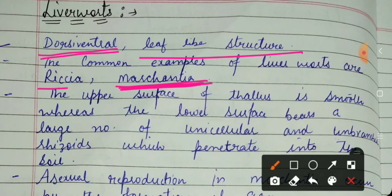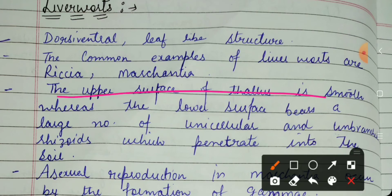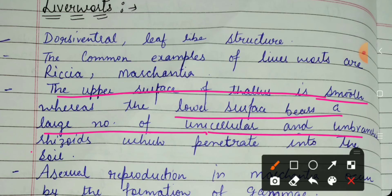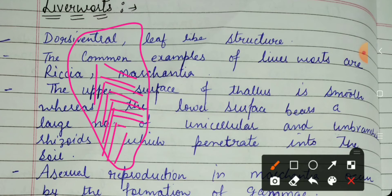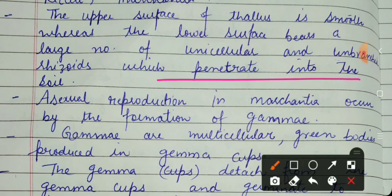The upper surface of the thallus is smooth. But the lower surface has a large number of unicellular and unbranched rhizoids. Rhizoids look like roots but are not roots — they are called rhizoids. The ventral surface of the liverworts body bears rhizoids that penetrate into the soil.